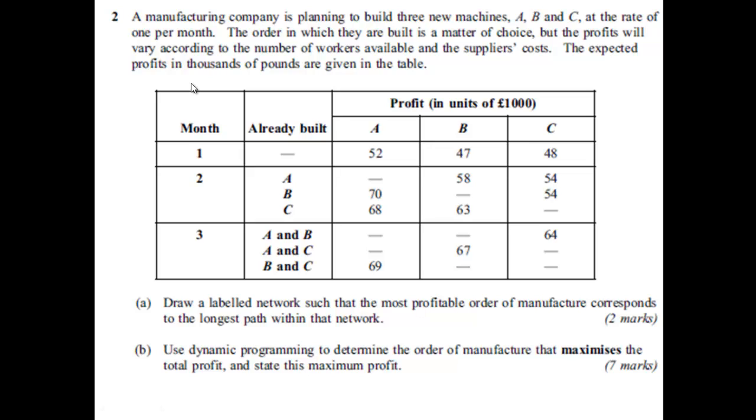This video works through an exam question on dynamic programming. A manufacturing company is planning to build three new machines, A, B and C, at a rate of one a month. What's important here is the order in which they're built, because there are implications for how much profit's made. Nine marks for this question.